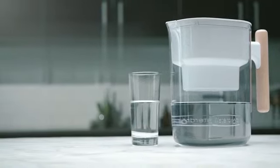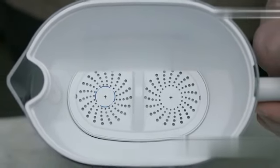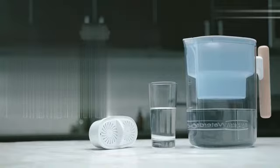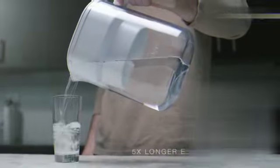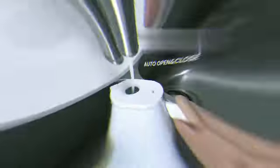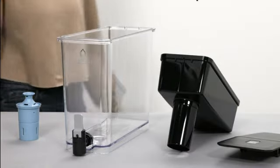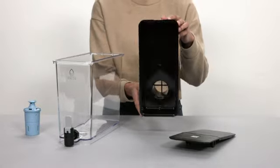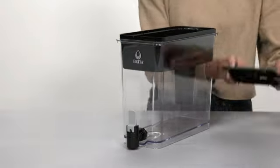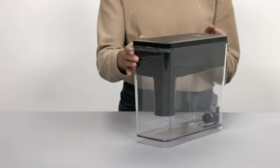The Brita Ultramax Elite large water dispenser is a sleek and practical solution for anyone looking to conveniently access filtered drinking water. With its black color and plastic construction, it seamlessly blends into any modern kitchen or office setting. One standout feature of the Brita Ultramax Elite is its generous capacity of 13.5 pounds, ensuring that you'll always have an ample supply of clean and refreshing water on hand. Whether you're hosting a gathering or simply staying hydrated throughout the day, this water dispenser has got you covered.